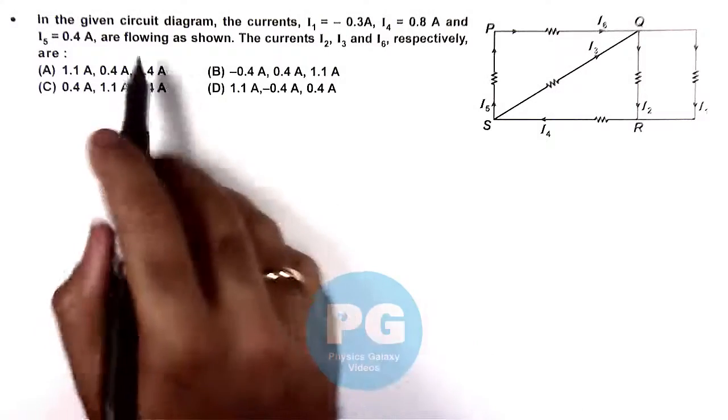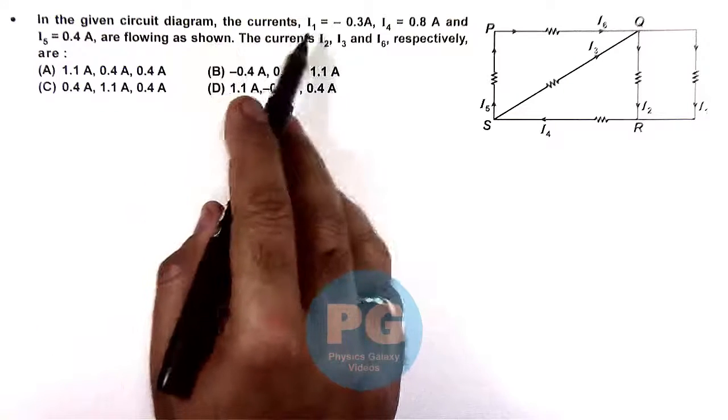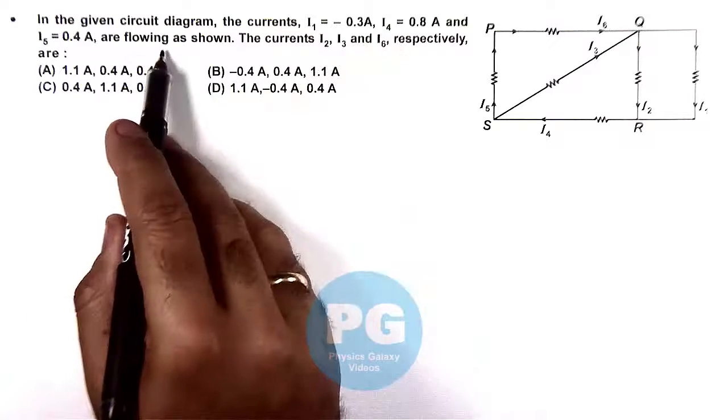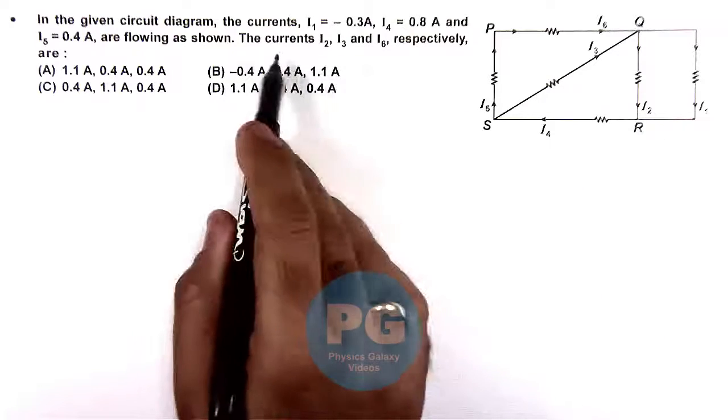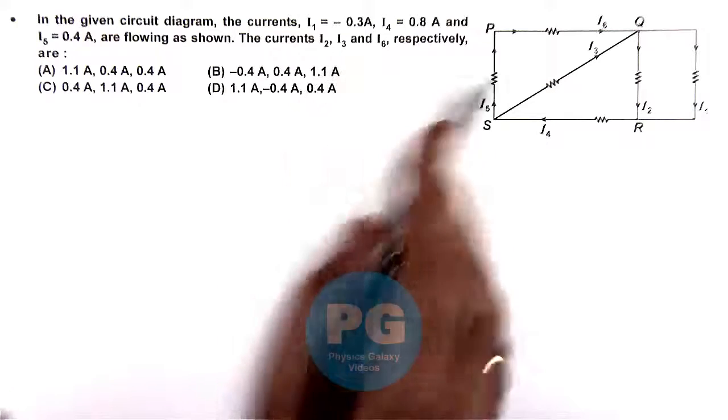In this question, in the given circuit diagram the currents i1, i4 and i5 are flowing as shown. These values are given in the circuit. We are required to calculate the current i2, i3 and i6.